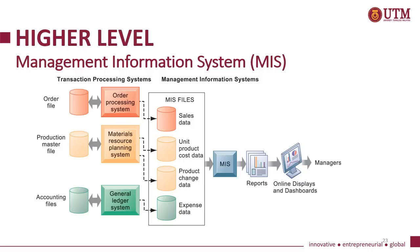This slide shows an example of a management information system. We have a transaction processing system at the operational level consisting of an order processing system, a material resource planning system, and a general ledger system. The management information system takes all the output from these three TPS systems and converts the data into sales, unit product cost, product change, and expense, then generates reports and provides online display and dashboards for managers.